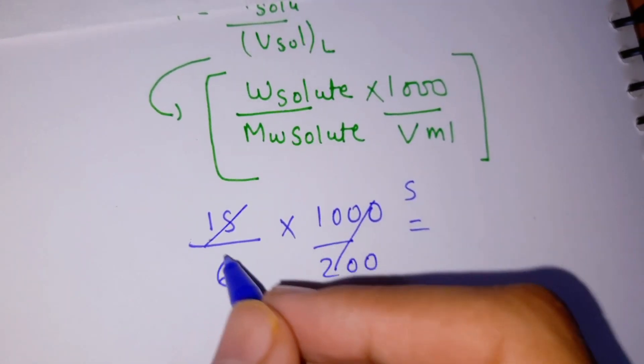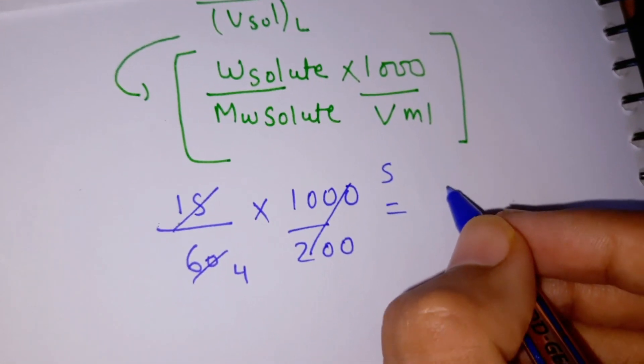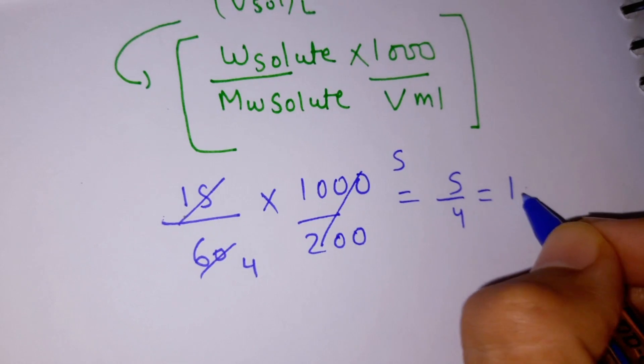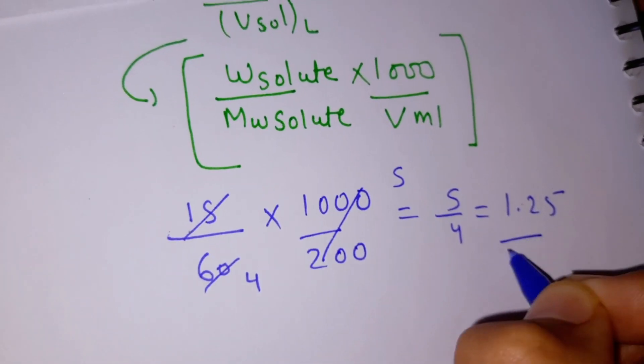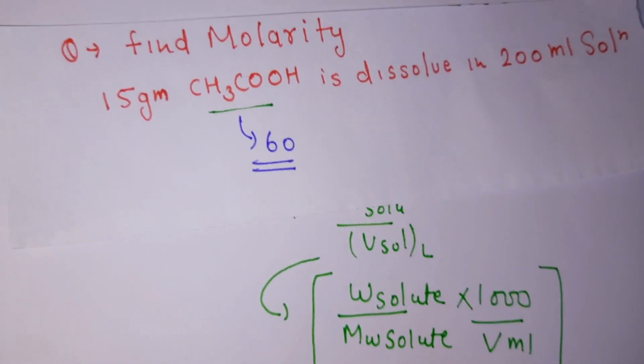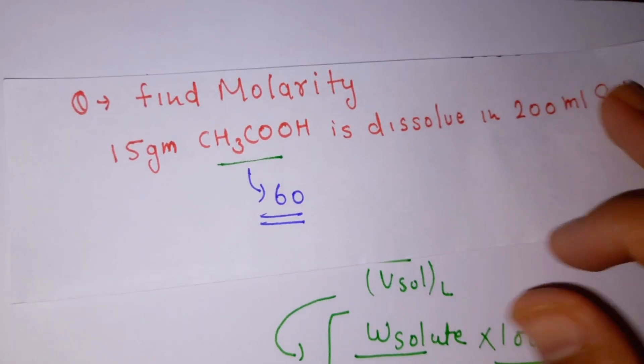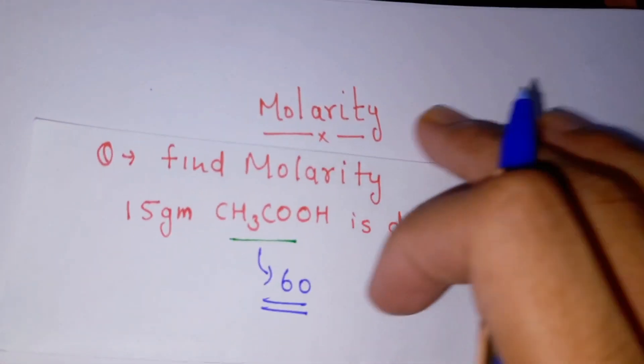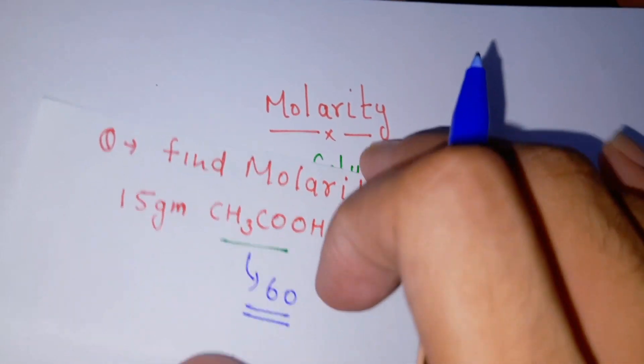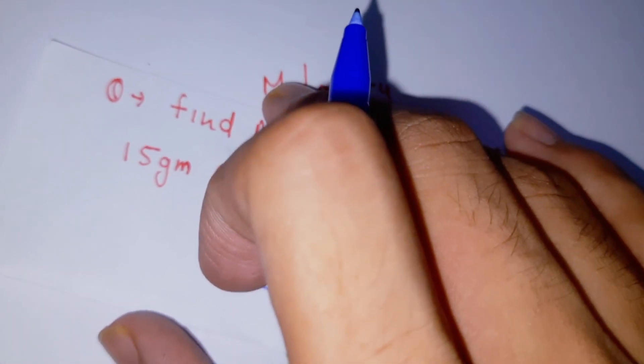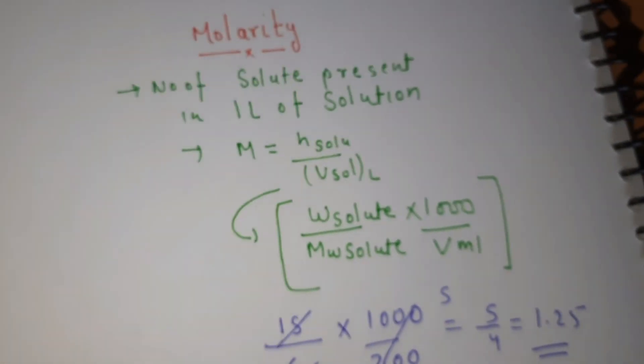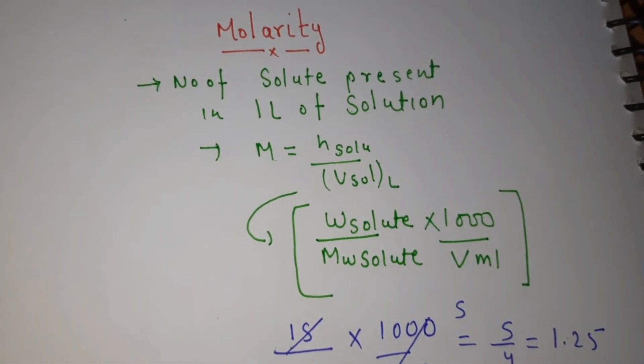By solving this, 15 over 4, then 5 over 4 equals 1.25. Then this is the example to find molarity. Molarity has some question variety, then we take some example in another video. Now thank you.